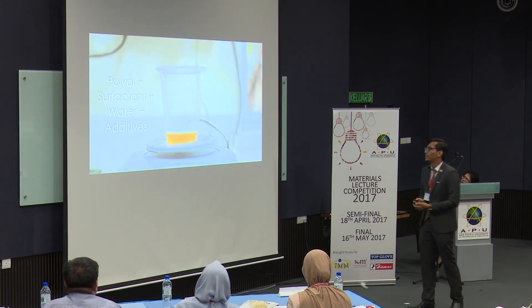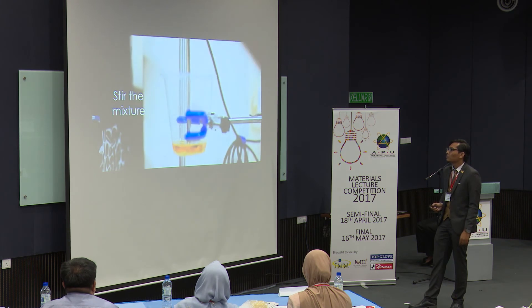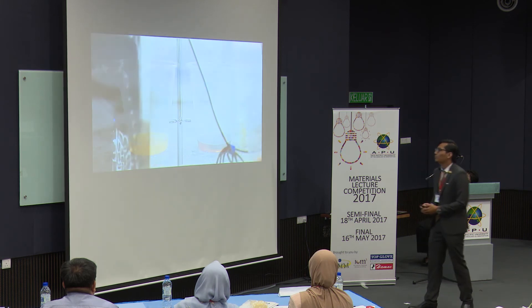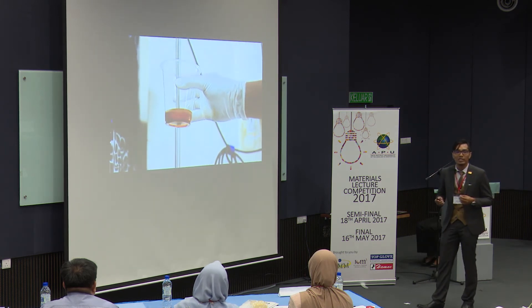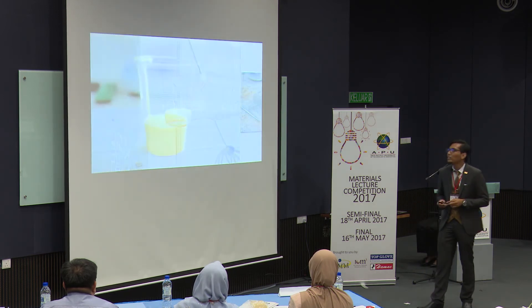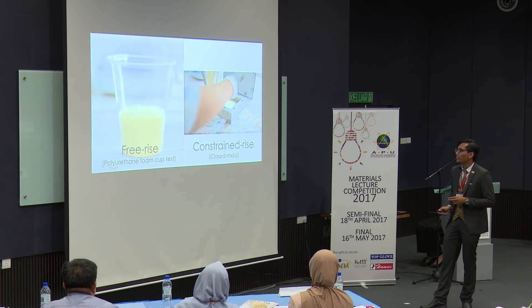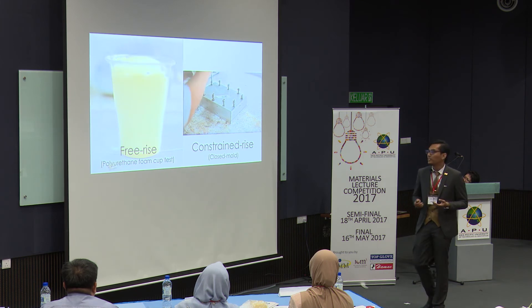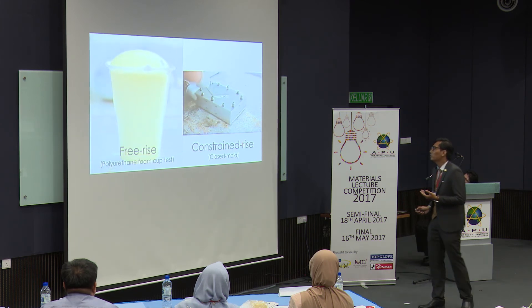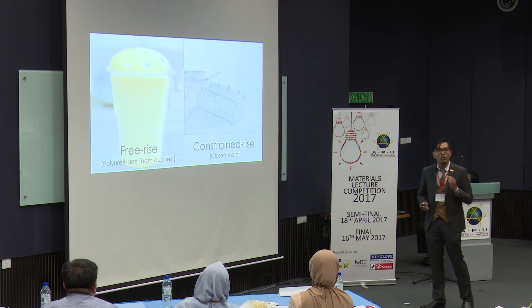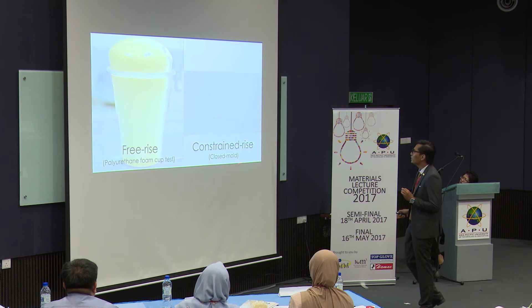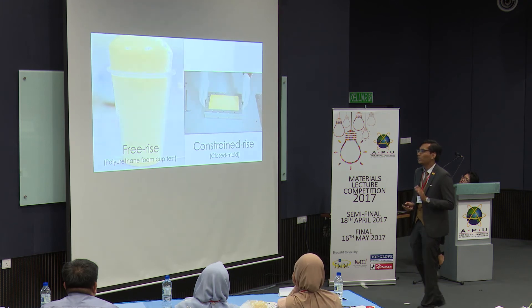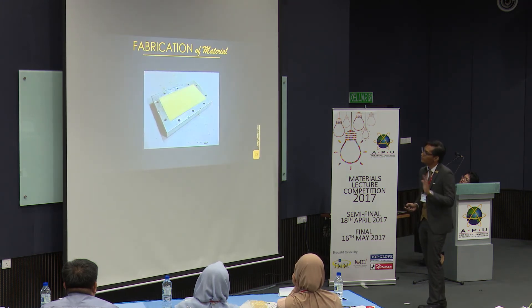Here's the first step: mixing the foam materials, followed by stirring the mixture, and then mixing with isocyanate. After mixing, the foaming process starts. The foaming process can be divided into two types: free-rise foaming and constrained-rise foaming. Free-rise foaming happens when you let the foaming process occur inside an open container, while constrained-rise foaming is carried out inside a closed rigid container — this is done to control the density and shape of the final product.